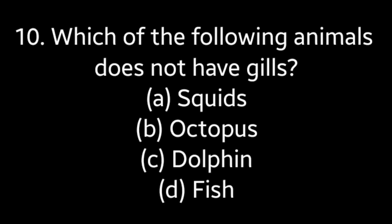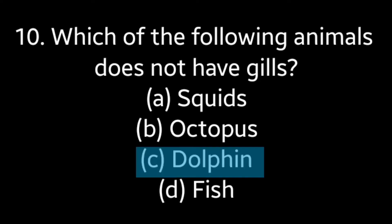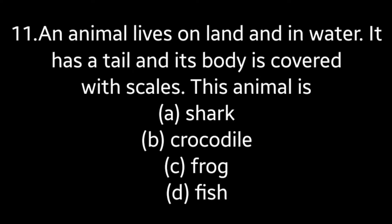Question number 10: Which of the following animals does not have gills? Option A: squids, option B: octopus, option C: dolphin, option D: fish. Answer is option C: dolphin.